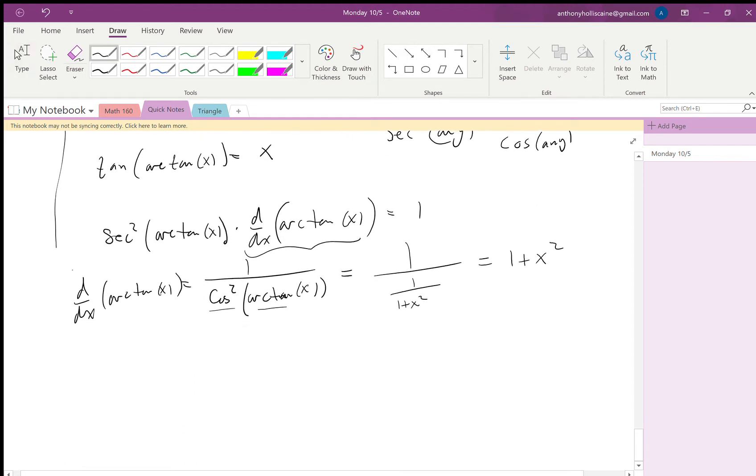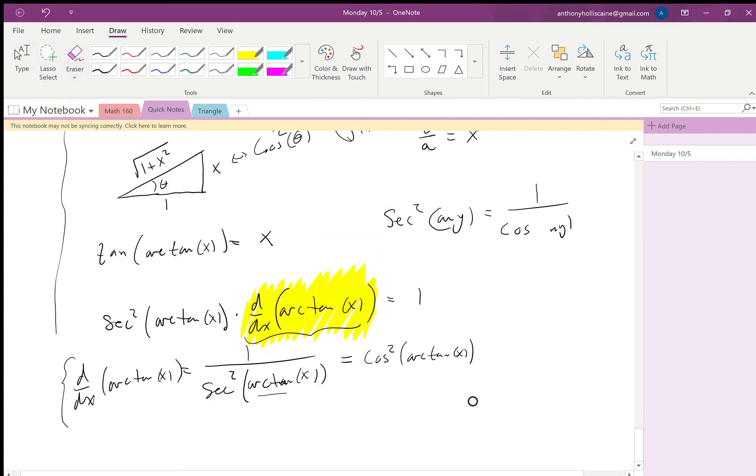I made an algebra mistake right here, so I wanted to get this derivative by itself. I should divide over everything else, which means this should actually be 1 over secant squared. And secant is 1 over cosine, so there's this relationship where 1 over secant is cosine and 1 over cosine is secant. So this is the same thing as just having a cosine squared of arc tangent of x, and now everything works out.